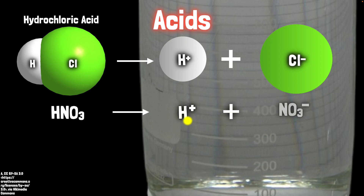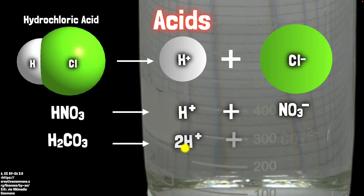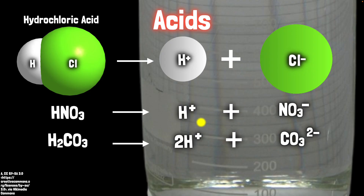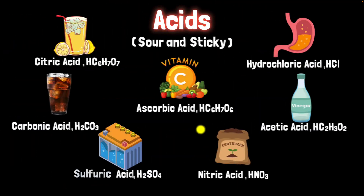Let's take a couple more examples. Take nitric acid — its aqueous solution gives you H+. Take carbonic acid — its aqueous solution again gives you H+. Acids produce H+ in aqueous solutions. And in fact, this is the reason why acids taste sour, because we have receptors on our tongue that bind to these positively charged hydrogen atoms when our saliva breaks down certain foods, and our brain gives us the sensation of sourness.